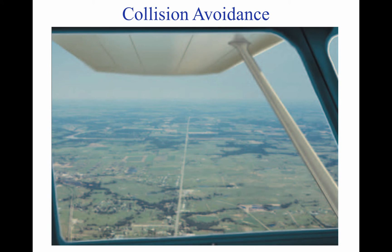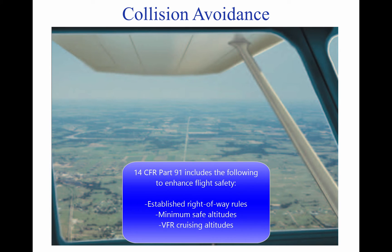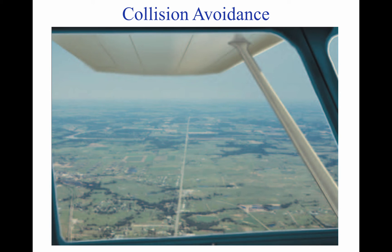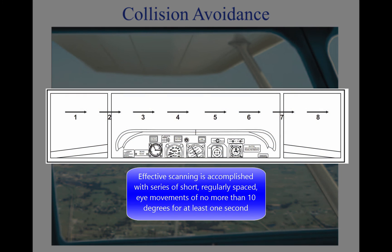Collision Avoidance. 14 CFR Part 91 has established right-of-way rules, minimum safe altitudes, and VFR cruising altitudes to enhance flight safety. The pilot can contribute to collision avoidance by being alert and scanning for other aircraft, which is particularly important in the vicinity of an airport. Effective scanning is accomplished with a series of short, regularly spaced eye movements that bring successive areas of the sky into the central visual field. Each movement should not exceed 10 degrees, and each area should be observed for at least one second to enable detection. Each pilot should develop a scanning pattern that is most comfortable and adhere to it to assure optimum scanning.